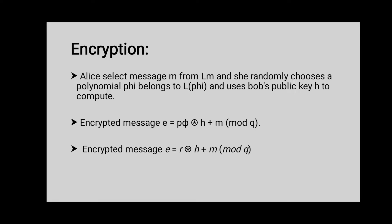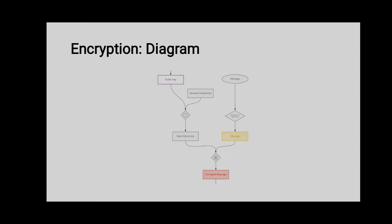After Alice has converted the message into a polynomial M, she is ready to use the public key H that she received from Bob. She chooses a random polynomial R, also called the blinding value. This is a crucial step for encryption since this random polynomial hides the polynomial M and makes it impossible to decrypt without knowledge of the private key. Alice then calculates the ciphertext E using the formula shown in this slide.